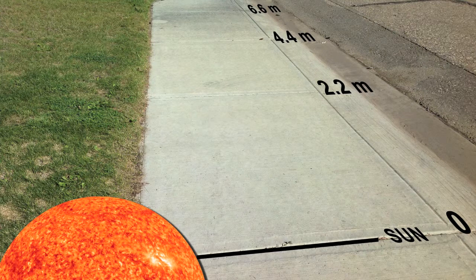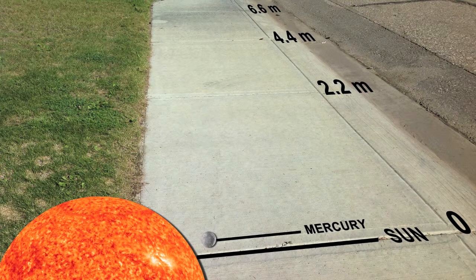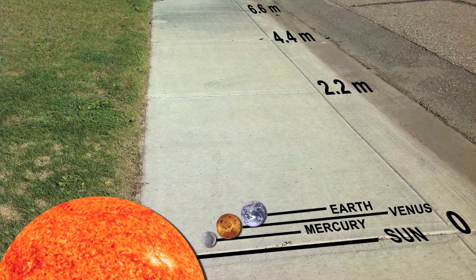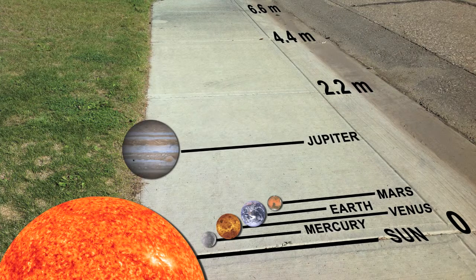Mercury is the planet closest to the Sun. In this model it will be 8 centimeters away from the Sun. Next comes Venus, placed at 15.7 centimeters. Next comes Earth, which in this model will be 21.8 centimeters away from the Sun. Continuing outward, the next planet is Mars, placed at 33.3 centimeters. Jupiter is next, and this largest planet in our solar system is at the 1.1 meter mark.